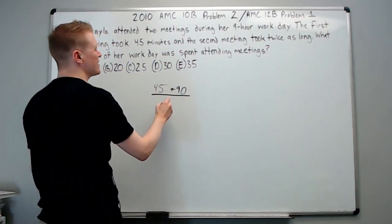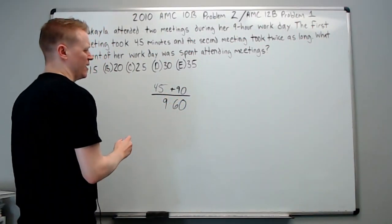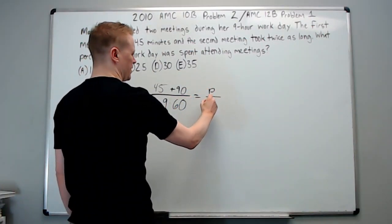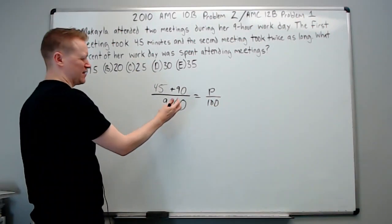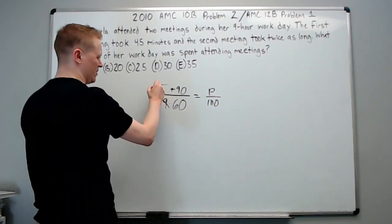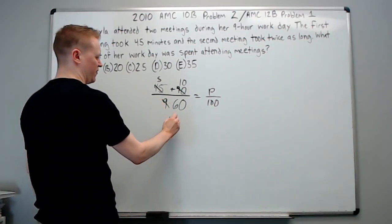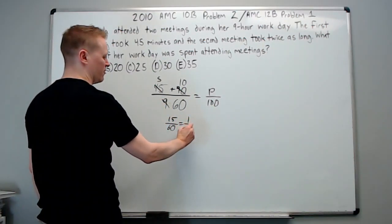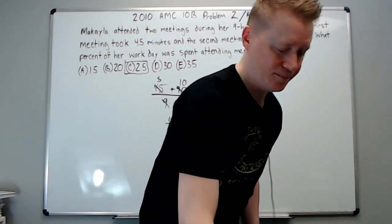So it needs to be this out of 9 times 60, because that's minutes, right? And you want this to be equal to P over 100. Notice we didn't make this 540. That's so that you can divide in. 9 goes into here 5 times and here 10 times, so you get 15 over 60, which is clearly 1 fourth, and everybody should know that's 25%.